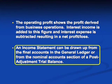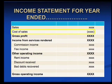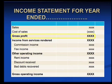The income statement can be drawn up from the final accounts in the general ledger or from the nominal account section of the post-adjustment trial balance. Looking at what the income statement looks like: you start off with your sales, then sales less cost of sales. Note that the cost of sales appears in brackets because we are deducting that amount, and that gives us our gross profit for the year.